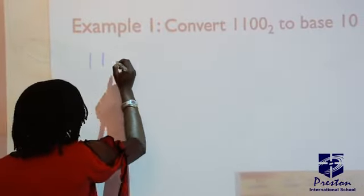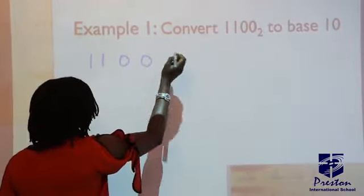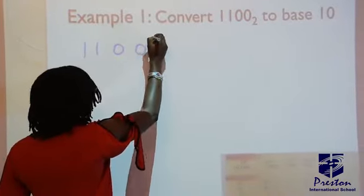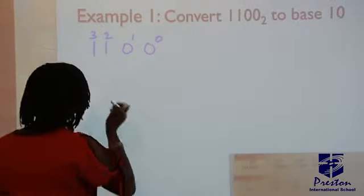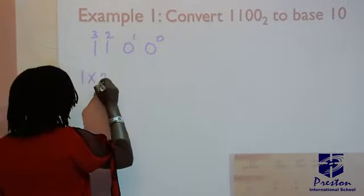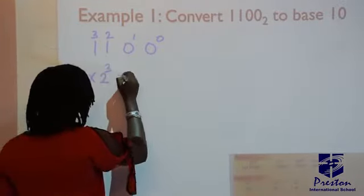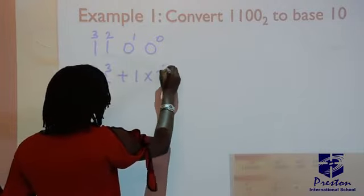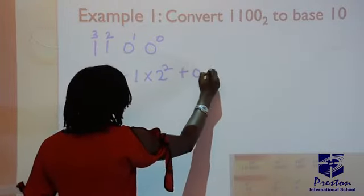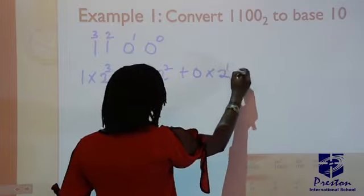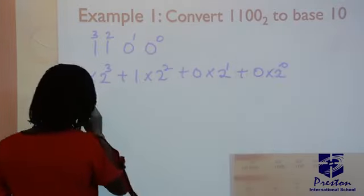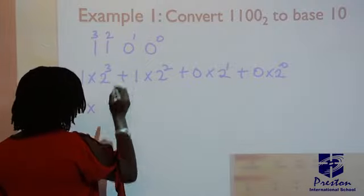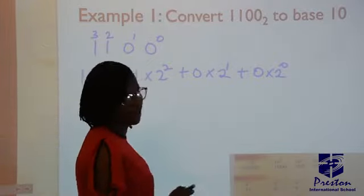So let's begin to put this in when solving this question: 1100 base 2. First thing, you place the power starting from 0, 0, 1, 2, 3. Then the next thing, you multiply with the base: 1 times 2 raised to power 3, 1 times 2 raised to power 2, 0 times 2 raised to power 1, 0 times 2 raised to power 0.